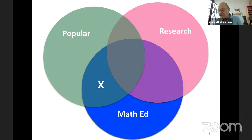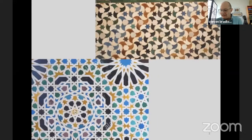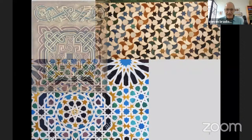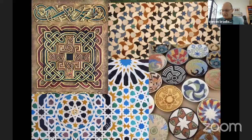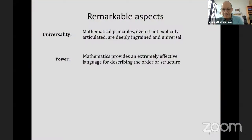Broadly speaking, this talk is about the intersection of visual arts and mathematics. There are many examples across many different cultures of decorative arts with distinctive mathematical aspects — the tilings in Islamic art, nowhere better exemplified than the tiles at the Alhambra, Celtic knots, and basketry from many cultures. These examples are striking because they illustrate that mathematical principles, even if not explicitly articulated, are deeply ingrained and universal.